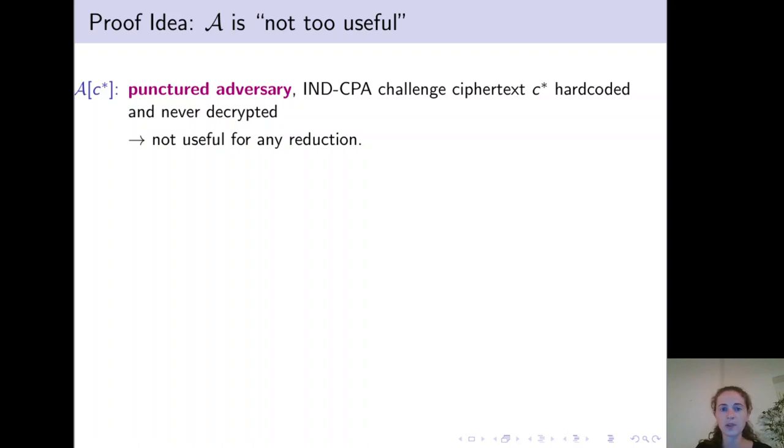To capture the idea that our adversary is not too useful for any reduction, we define a punctured adversary that has the IND-CPA challenge ciphertext C star hardcoded and never decrypts this ciphertext but instead assumes that this would encrypt the all-zero string. Clearly it is not useful for any reduction.